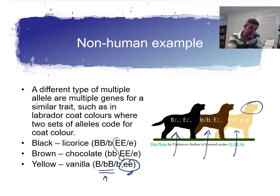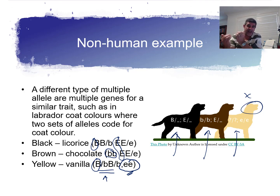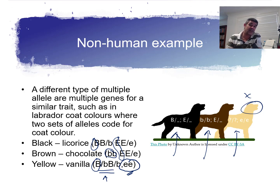If there is at least one dominant E — whether big E with big E or big E with little e — then the coat won't be yellow, and we look at the B gene to determine whether it will be black or brown. If there is a dominant B allele, the coat will be the black licorice colour. If it's the recessive B, the coat will be brown. This shows how genetics can be quite complex — it's not as simple as one dominant allele winning, because multiple genes with different allele combinations can interact to change how a particular trait is expressed.